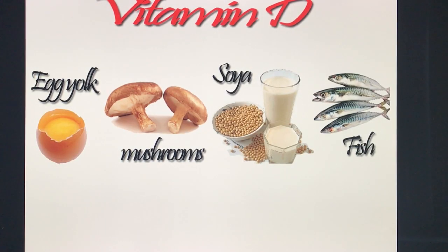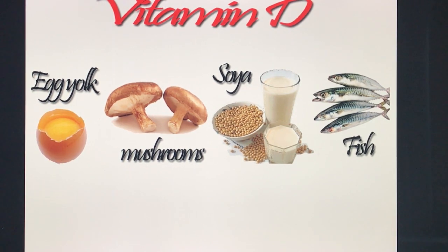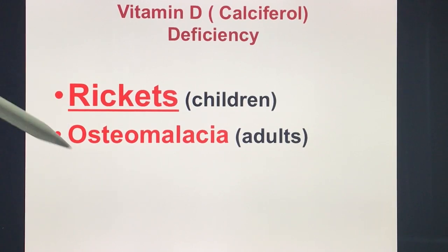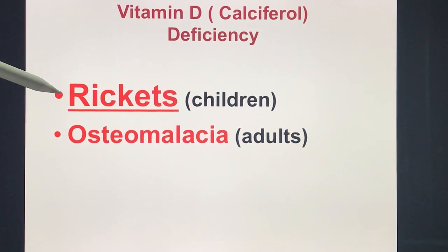Some sources of Vitamin D include egg yolk, mushrooms, soya, and fish. Regarding deficiency — memorize this, it will appear on board exams: Vitamin D deficiency in a child results in rickets; in adults it causes osteomalacia.